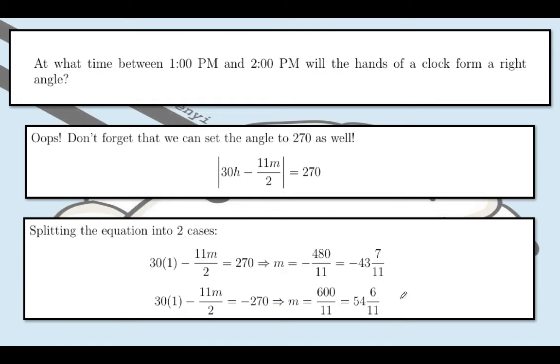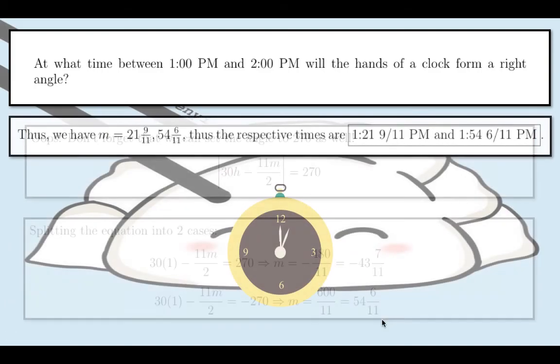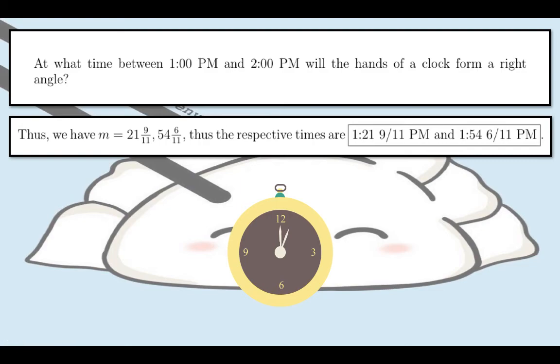Again, the negative 43 and 7 over 11 is an extraneous root since negative minutes doesn't make sense when we're talking about the time. And this value of m of 54 and 6 over 11, this is the time that we're actually finding because we know it's a little bit before 2 p.m. So from the two cases, we have m equals 21 and 9 over 11 and 54 and 6 over 11 as the possible values of m.